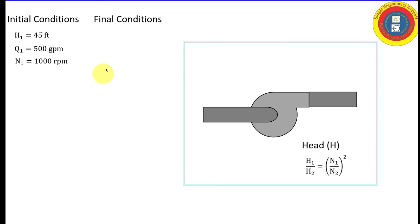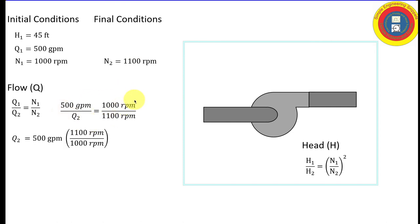We're given the initial conditions. The final conditions are going to be noted with a subscript two. We have the final pump speed, 1100 RPM. So let's start with flow. Using the affinity law, we can quickly solve for the final flow, which increased by 10% as we expect it to 550 gallons per minute.